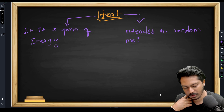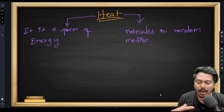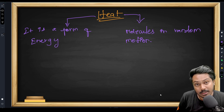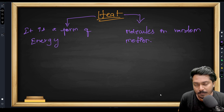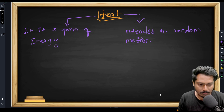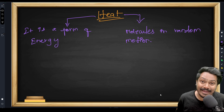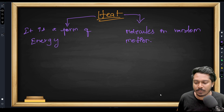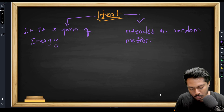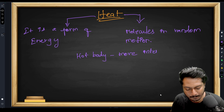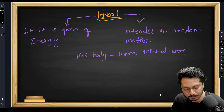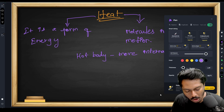We have molecules moving in random motion, and heat is an internal energy. Once these molecules or particles start to move, the more vigorously they move, the greater will be the heat produced by that body. So a hot body will have more internal energy.